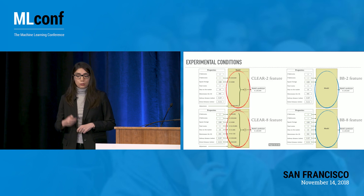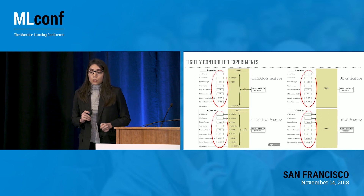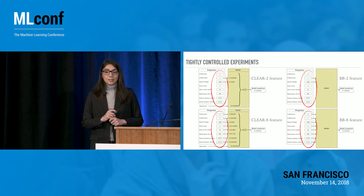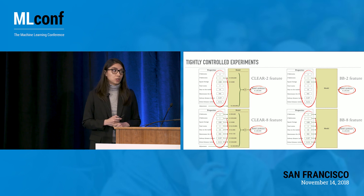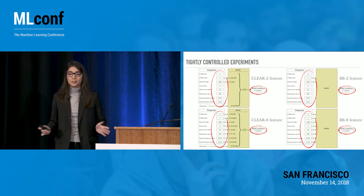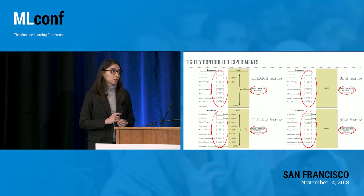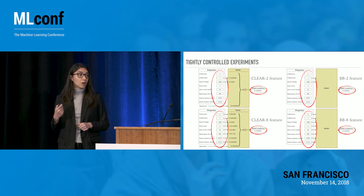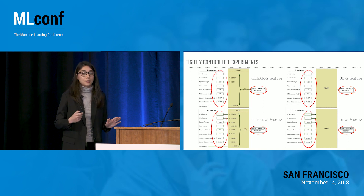Something super important in our design: all users in all conditions saw the exact same inputs — the same apartment features — and the exact same model predictions. The only thing that differed across conditions was what they saw in between. This is how we were able to run tightly controlled experiments and associate any difference in human behavior across conditions directly to what they saw in the model.